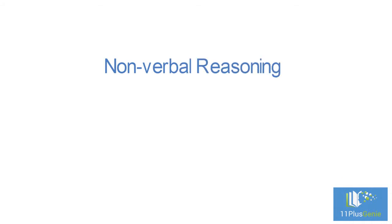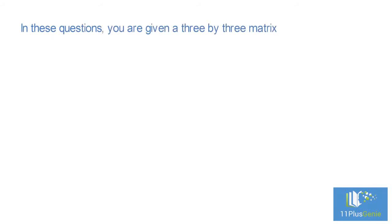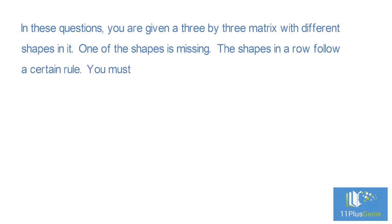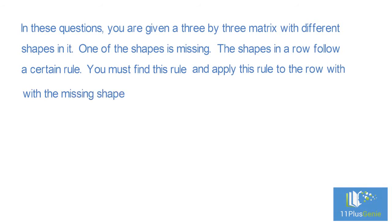Nonverbal reasoning type 6: figure matrix. In these questions you are given a 3 by 3 matrix with different shapes in it. One of the shapes is missing. The shapes in a row follow a certain rule; you must find this rule and apply it to the row with a missing shape to find the shape from amongst the answer choices.